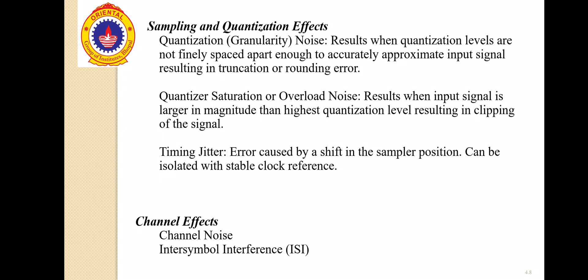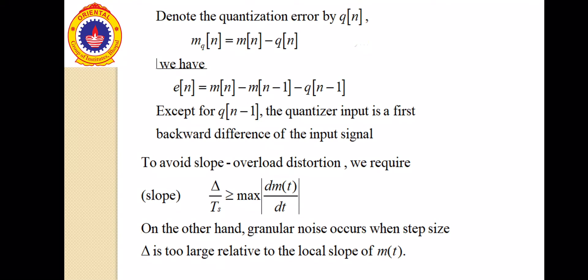Sampling and Quantization Effect. Granular Noise: resulting when the quantization labels are not finely spaced apart enough to accurately approximate input signal, resulting in truncating or rounding error. Second is Slope Overload Noise: resulting when input signal is larger in magnitude than highest approximation label, results in clipping of the signal. Timing Jitter: error caused by a shift in the sampler position, can be isolated with a stable clock reference. There are some channel effects also, that is channel noise and ISI, Inter Symbol Interference.